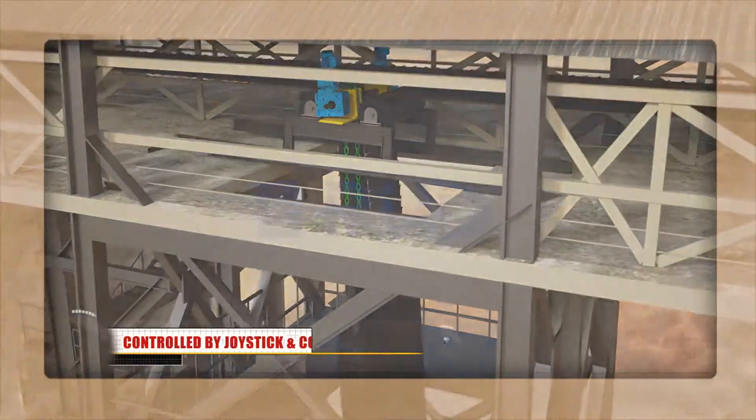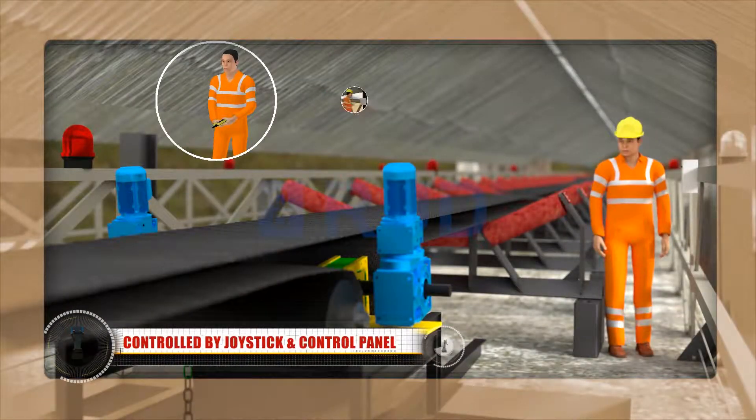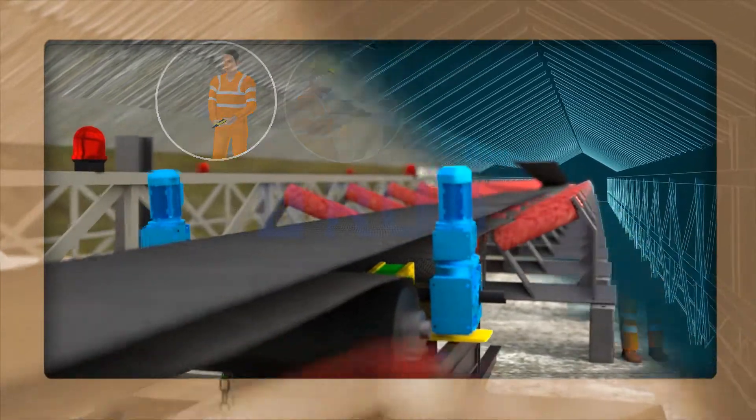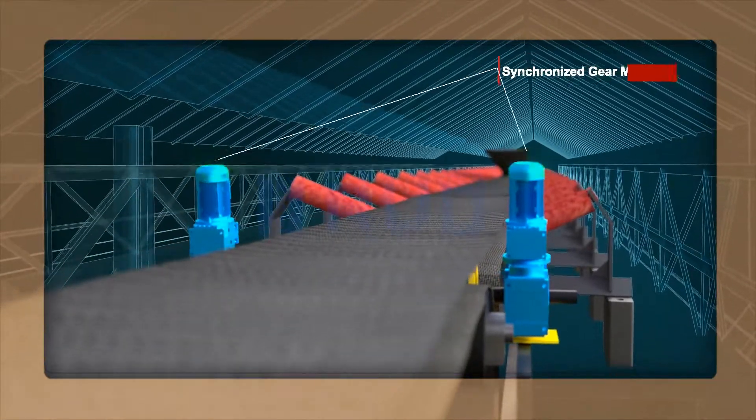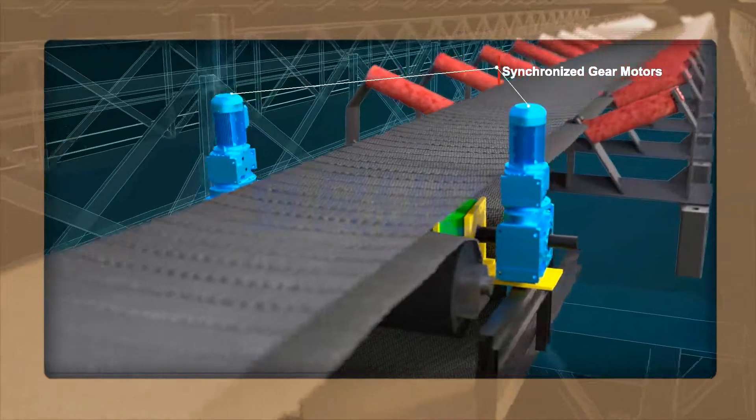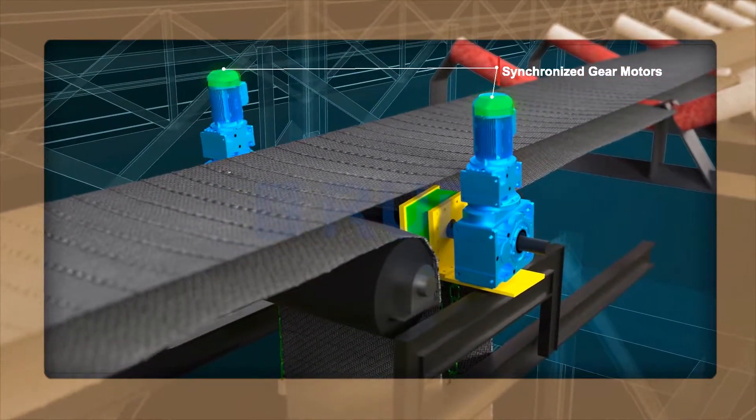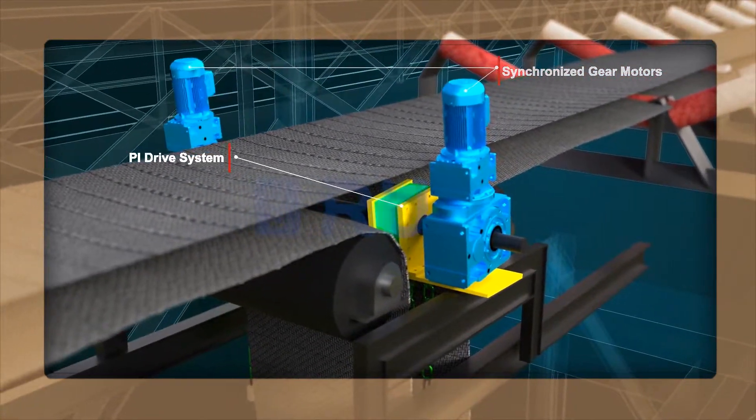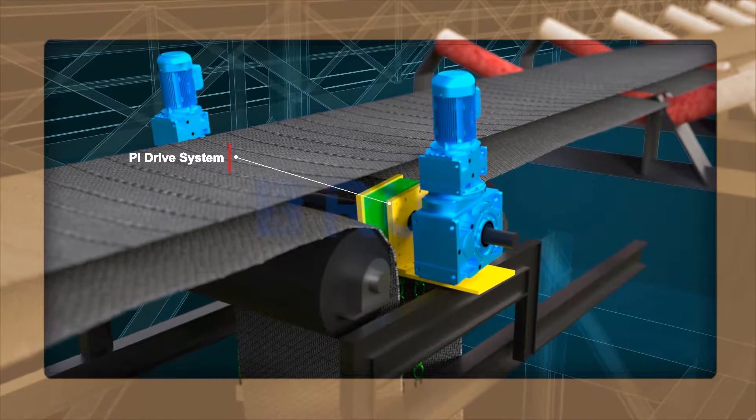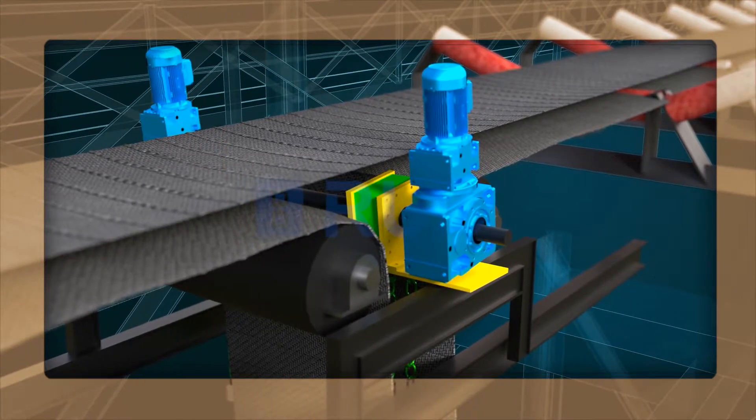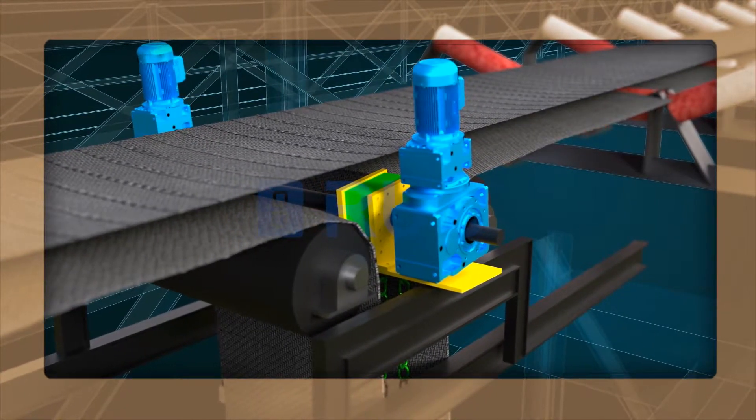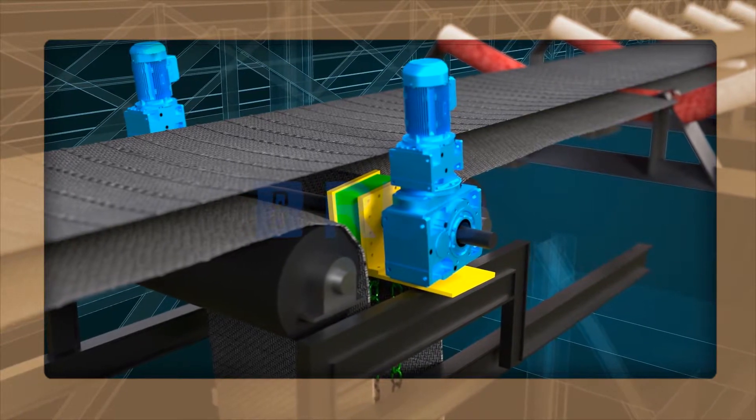Advantages of take-up device: controlled by joystick and control panel. Our unit is driven by a heavy duty synchronized gear motor and PI drive system. Once power is given to motor, it drives the PI drive system which moves the counterweight chain up and down.